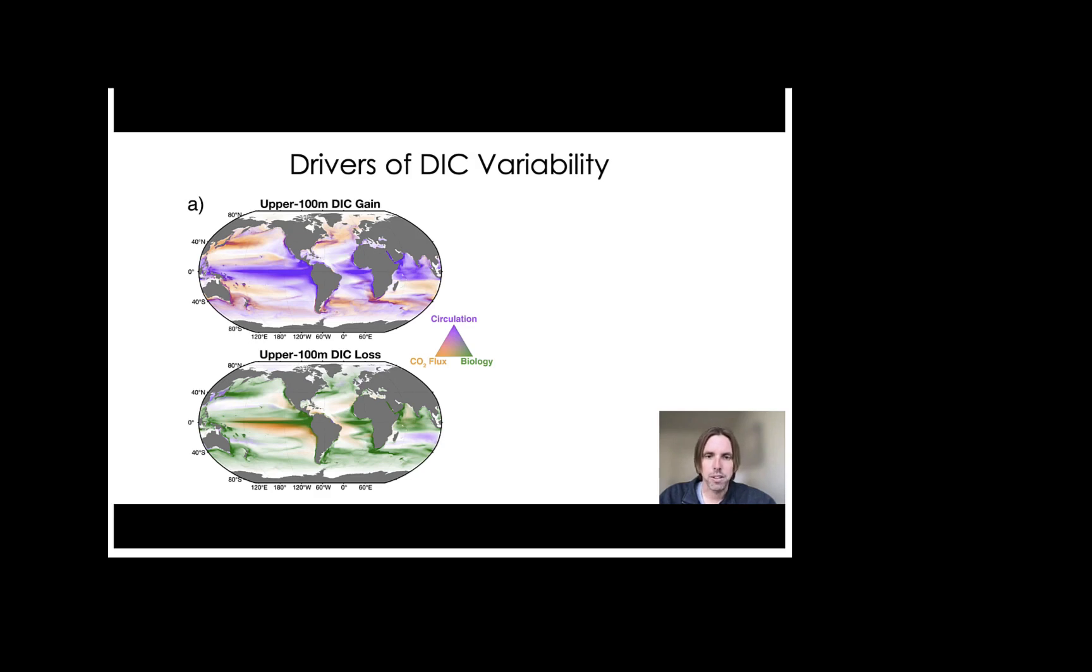In the bottom panel, the DIC loss is driven primarily by biological productivity, so the green colors, and also some contribution from CO2 outgassing in equatorial regions, which is strongest in the eastern equatorial Pacific Ocean.